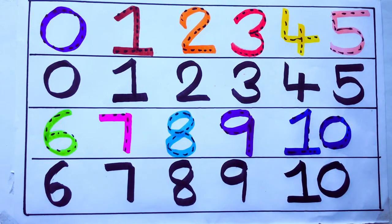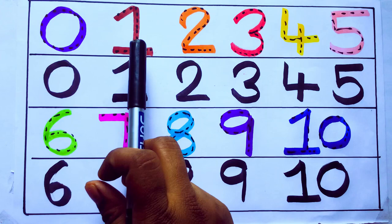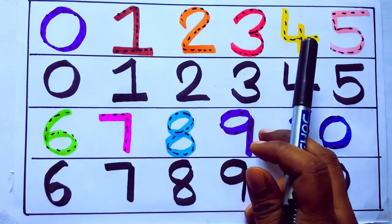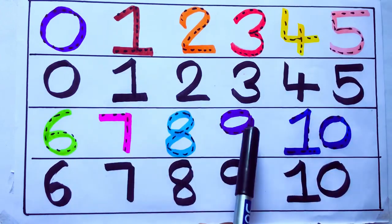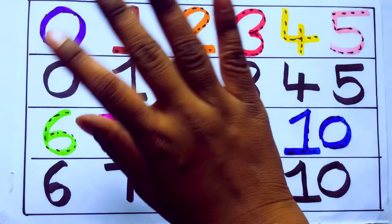One second learning numbers. 0, 1, 2, 3, 4, 5, 6, 7, 8, 9, 10. Okay. Bye kids.